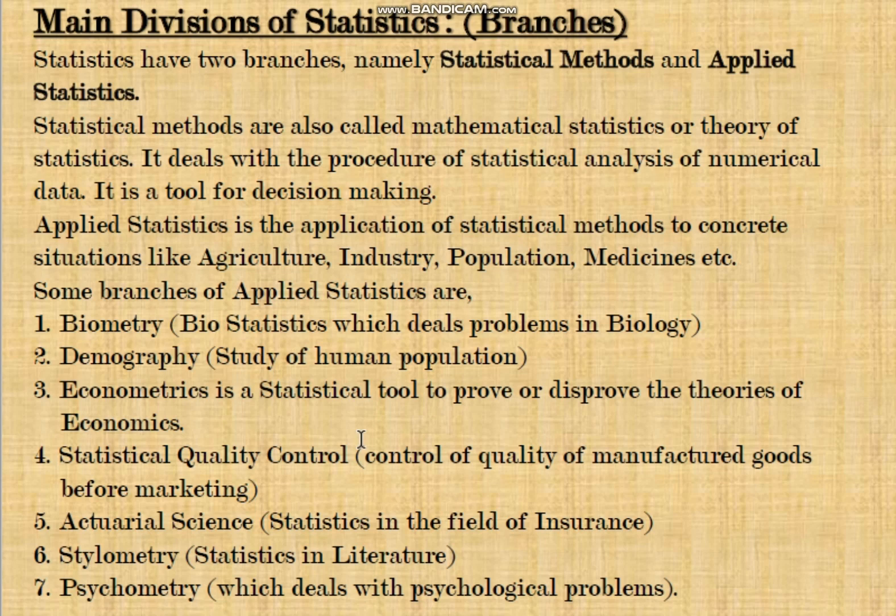Econometrics is the application of statistical techniques and tools in the field of economics — used to prove or disprove certain theories proposed in economics. The fourth branch is statistical quality control, which is the control of manufactured goods' quality before marketing.